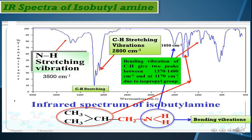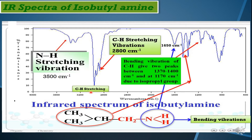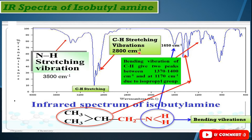Talking about the bending vibrations, the amine group absorption frequency is at 1650 cm⁻¹, due to the N-H bending vibration. Moving to the carbon-hydrogen stretching vibration, you can see a group of sharp peaks below 3000 cm⁻¹, which is typical for C-H stretching. These stretching vibrations are particularly at around 2800 cm⁻¹.